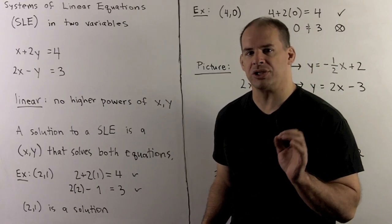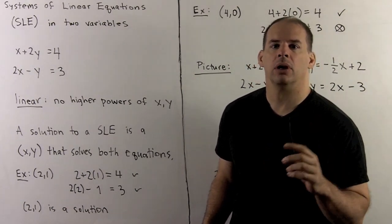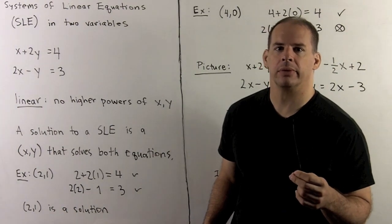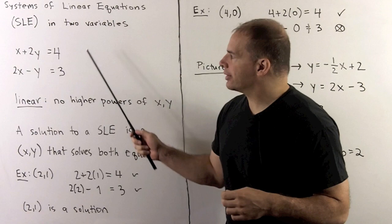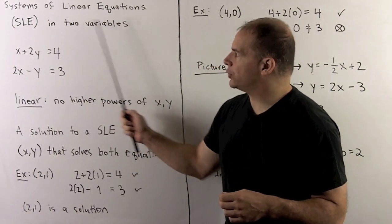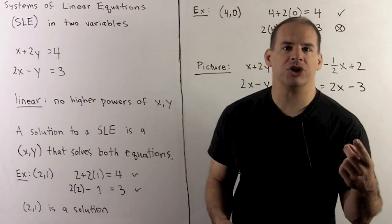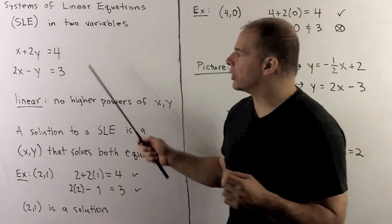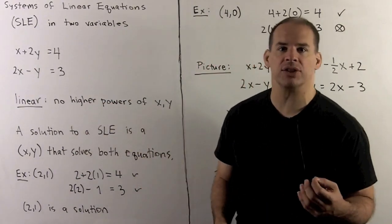Now that we have the basics of equations of lines and how to graph lines, we consider systems of linear equations in two variables. A system of equations is just a collection of equations. We have two variables, normally x and y, and linear means we have no higher powers of x or y. So essentially, we're just looking at a collection of equations of lines.